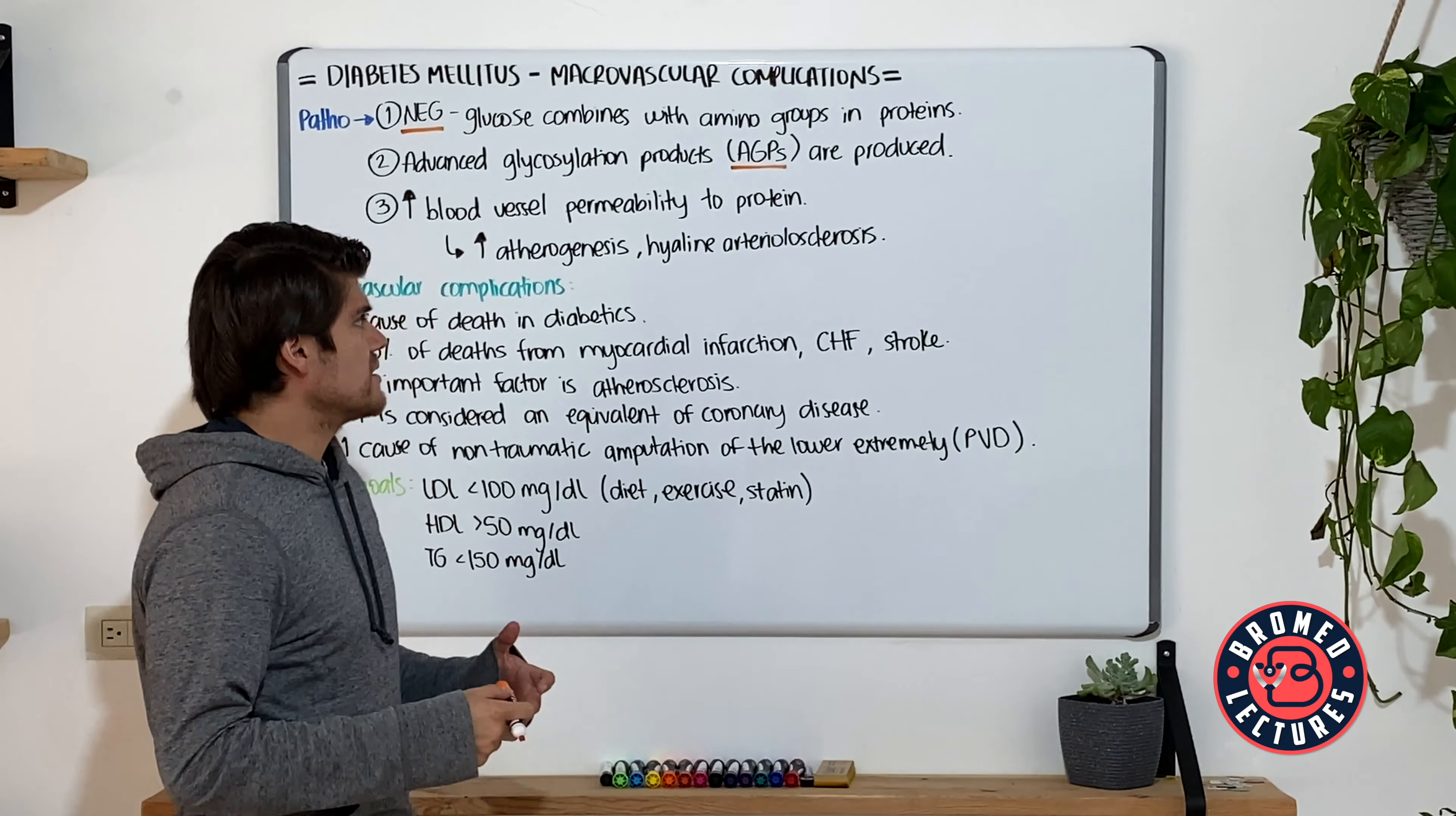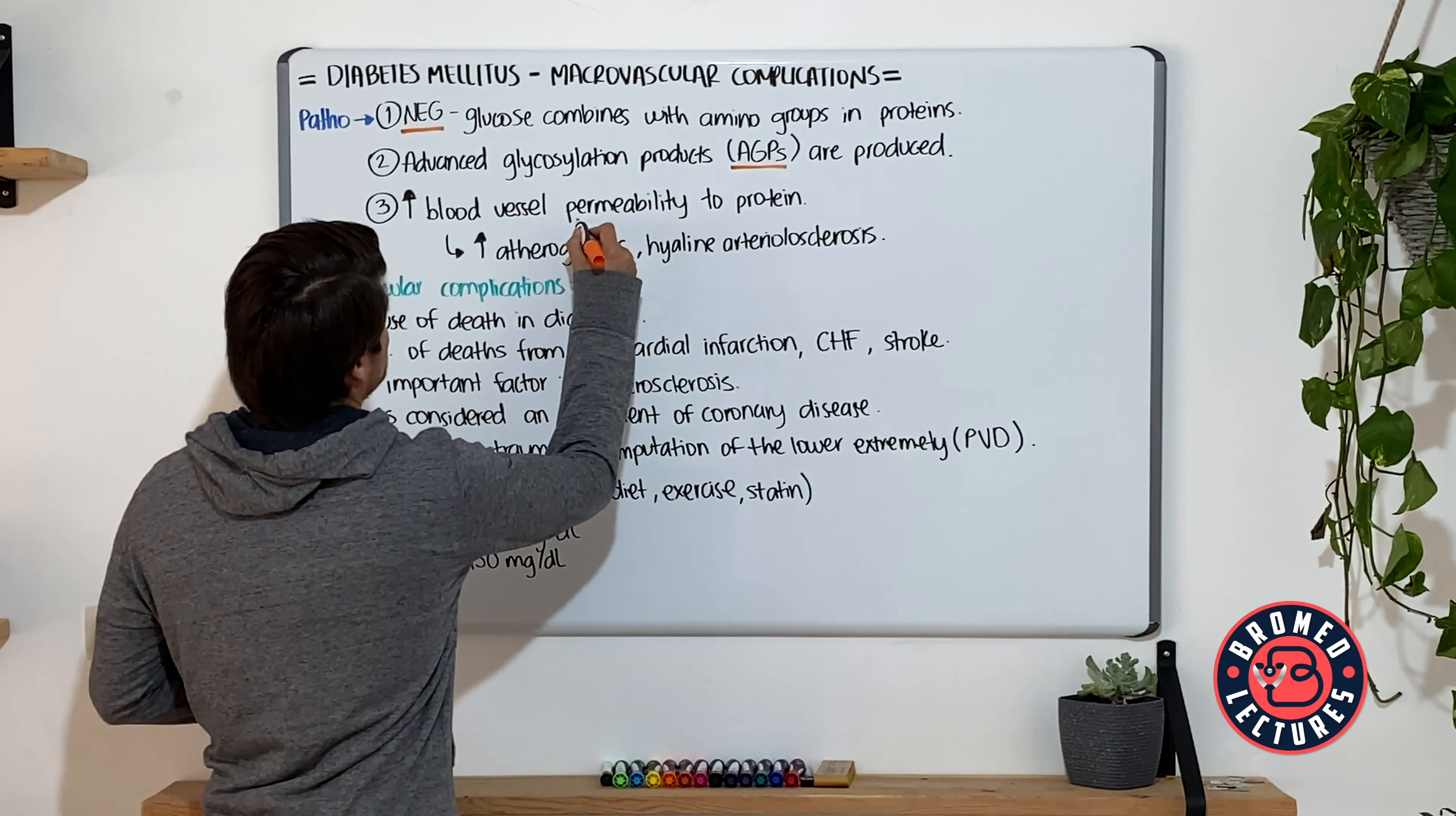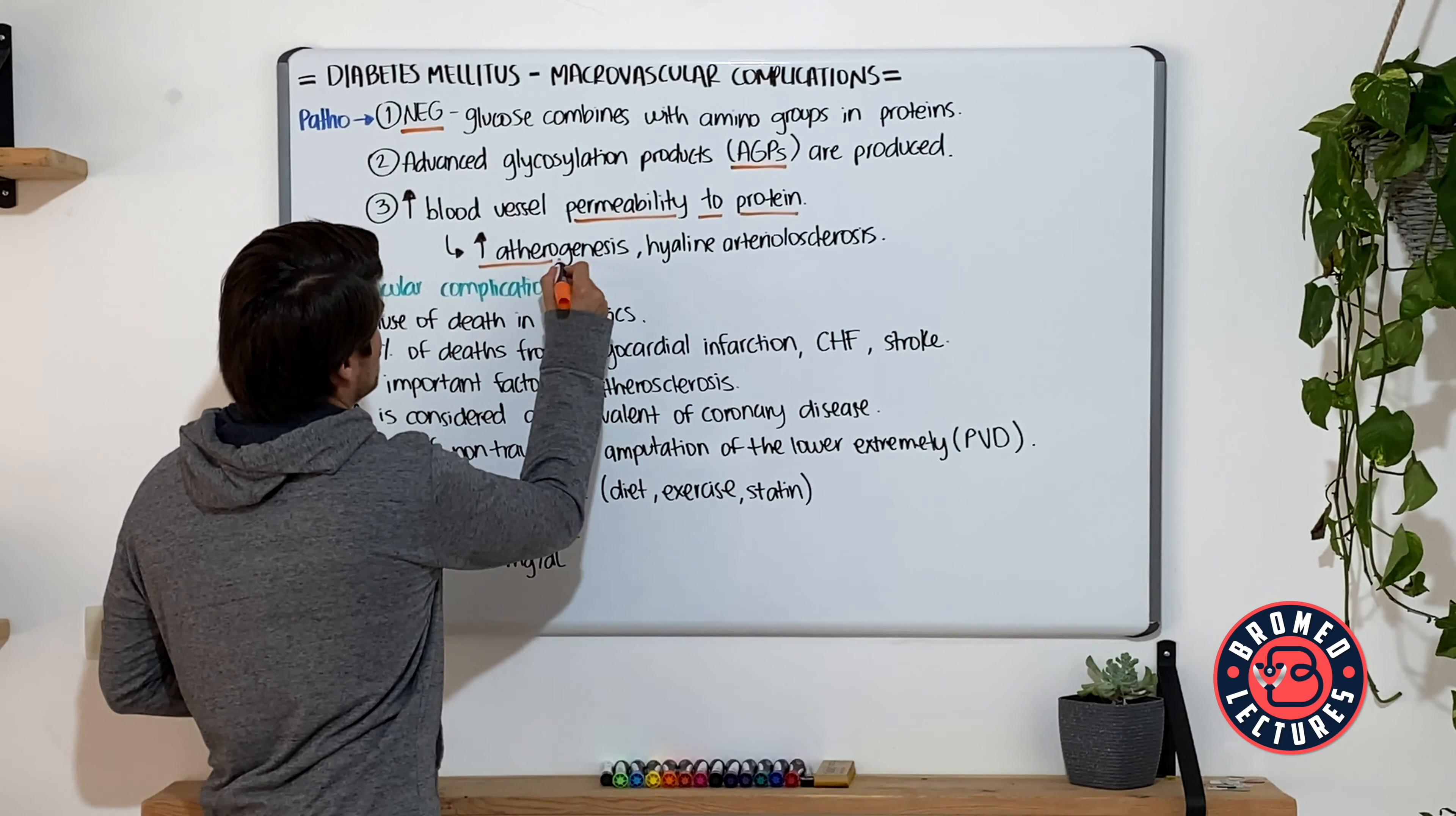Now, this is going to cause the production of advanced glycosylation products, which are going to be present in blood and at the basement membrane of the blood vessels.